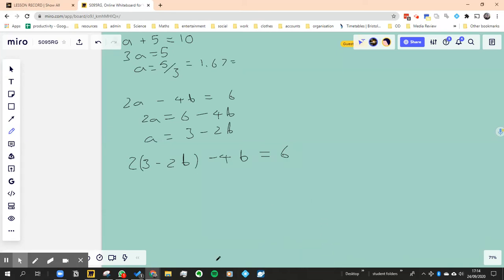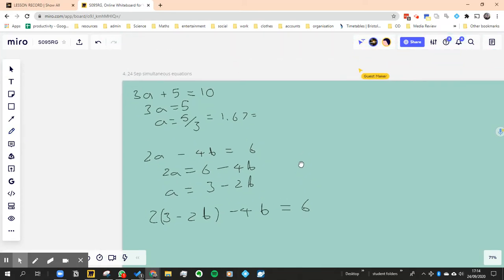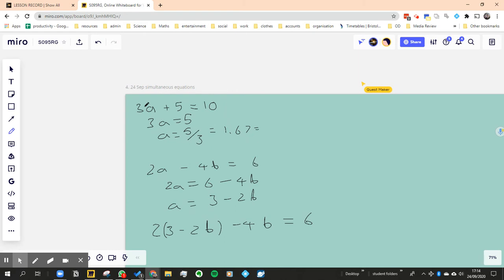So what have we done so far? First we had an equation 3a + 5 = 10. To solve it, you take away 5 from both sides, you got 3a = 5. Then you divide by 3 from both sides.